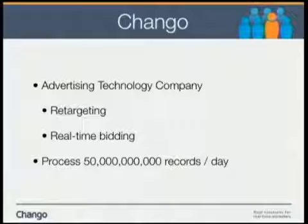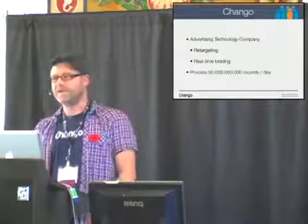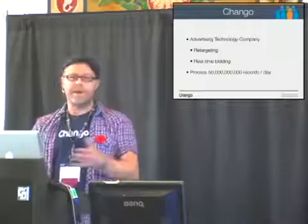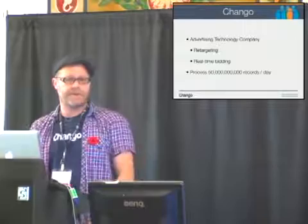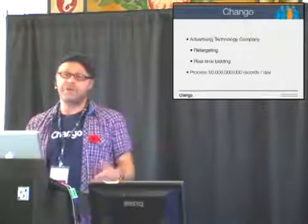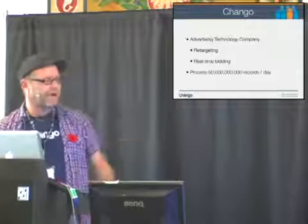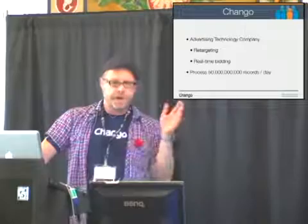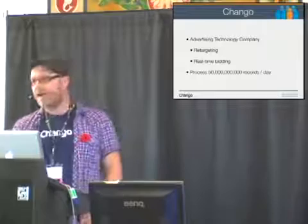Chango's an ad tech company — we do search retargeting. We're on about 10 ad exchanges and receive hundreds of thousands of requests for displaying ads per second. This translates into billions of records per day. We've got about 50 to 100 rules that we run regularly on this data to target different dimensions. We're crunching a lot of data — about 50 billion records per day that we process, and a lot of those records we go over multiple times.